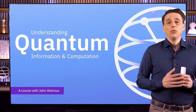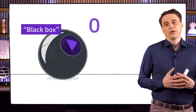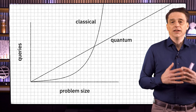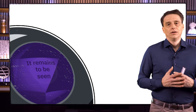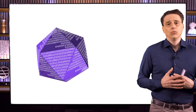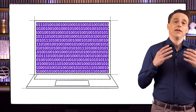In the previous lesson, we discussed the query model of computation, and we saw that in that model, quantum algorithms can provide a striking advantage over classical algorithms, including an exponential advantage in the case of Simon's problem. Unfortunately, the query model doesn't really have any direct or immediate practical relevance. The notion of a black box is a very useful abstraction, but we have some work to do if we're going to apply the insights we've gained from the query model to a more standard computational setting, where inputs are given as strings of bits, rather than as oracles or black boxes.